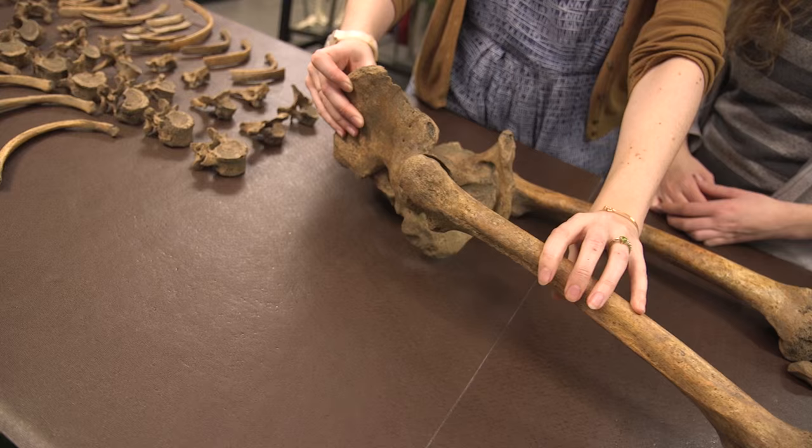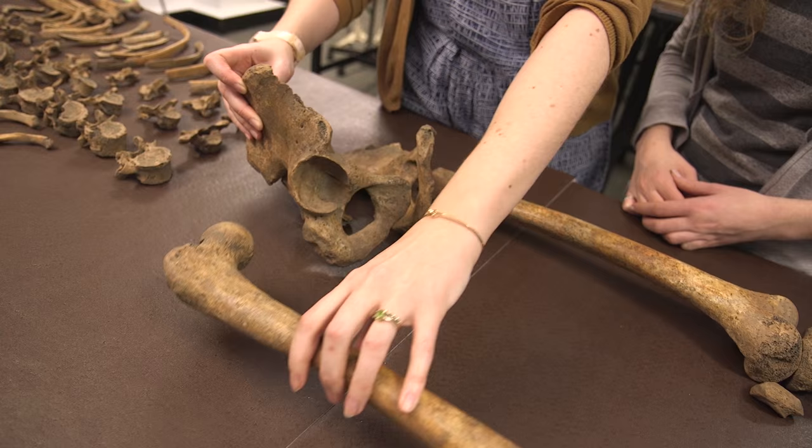To determine biological sex, what we have to do is look at parts of the skeleton that are sexually dimorphic. So parts of the skeleton whose shape and form are determined by your genetic biological sex. And we do this by looking at a suite of traits on the pelvis and also on the skull.